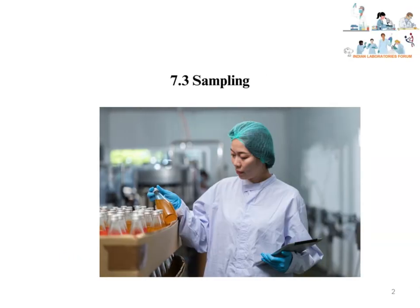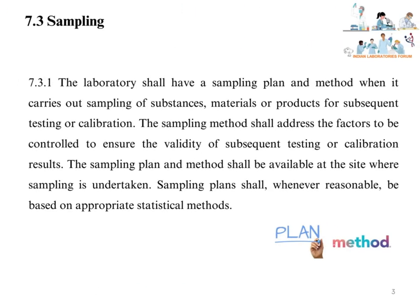Clause 7.3: Sampling. The laboratory shall have a sampling plan and method when it carries out sampling of substances, materials, or products for subsequent testing or calibration. This particular clause demands a procedure for sampling.